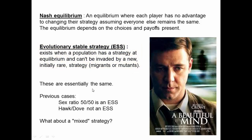Often Nash equilibrium and ESS are essentially the same, but you can think of Nash equilibrium as being based on individual strategies, while ESS is based on a set of strategies used by a group played at different frequencies. The sex ratio is an ESS, however the hawk-dove game is not an ESS — because when you have a population of all doves it can be invaded by a single hawk, and when you have a population of all hawks it can be invaded by a single dove.